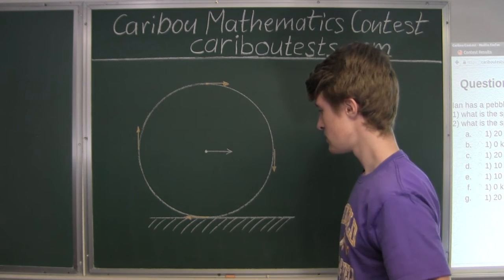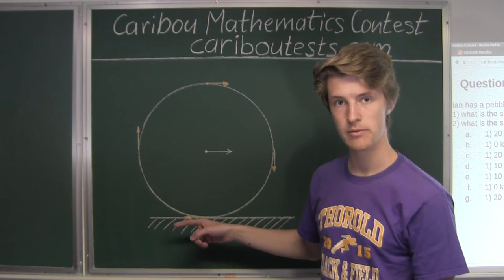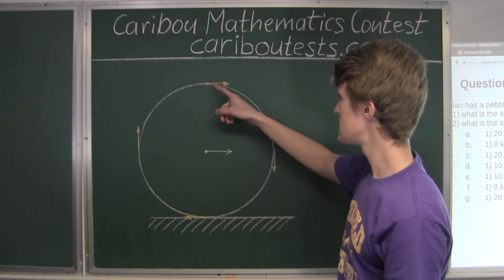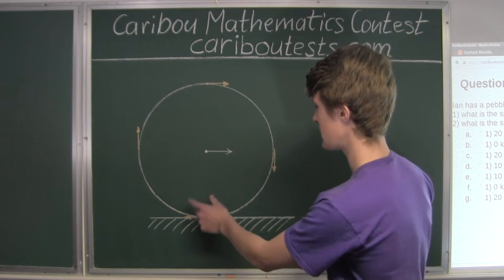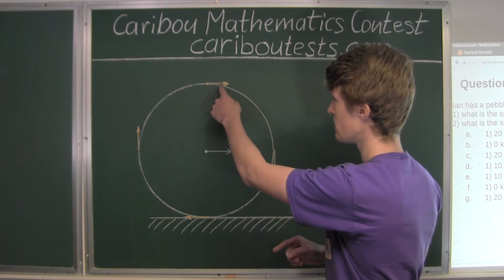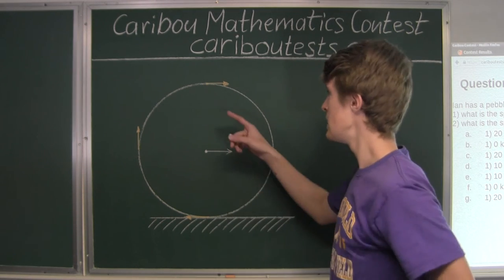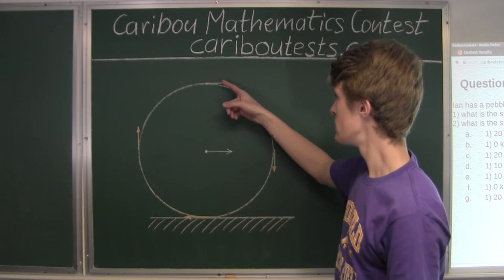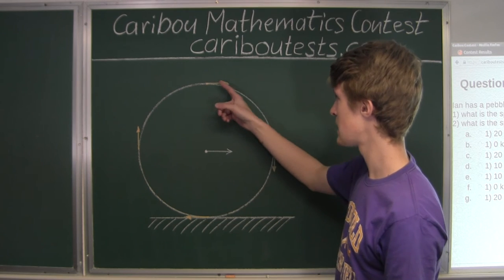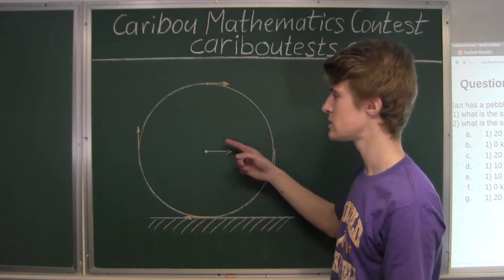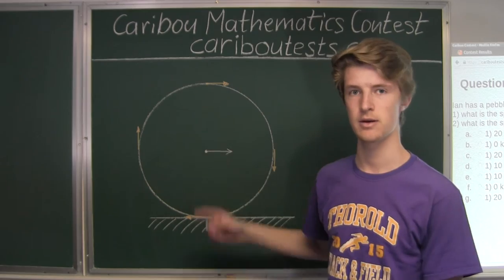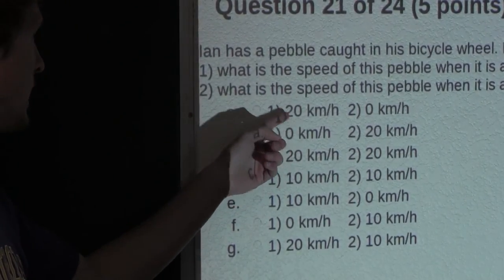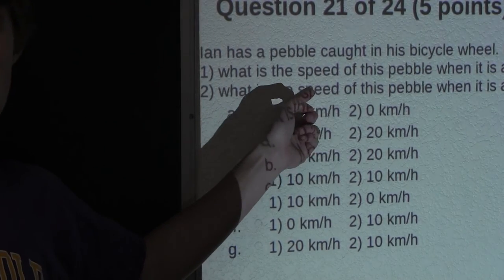So we know that when the pebble is at the bottom of the wheel, it has a velocity of zero in relation to the ground. When it's at the top of the wheel, it has the same absolute velocity of 10 kilometers per hour, but now it is in the same direction as the bike frame's motion. So the sum of these two velocities is 10 plus 10, which is 20 kilometers per hour.